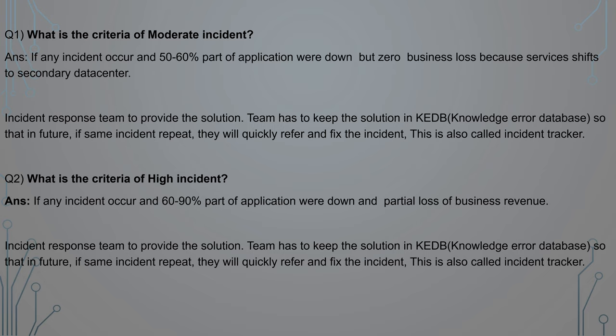Question number one: what is the criteria of a moderate incident? That means, if any incident happens, how will you classify it as falling under the moderate category? Here is the answer. If an incident occurs and 50 to 60 percent of the applications are down, but there is zero business loss because services shift to the secondary data center, such an impact falls under moderate incidents.